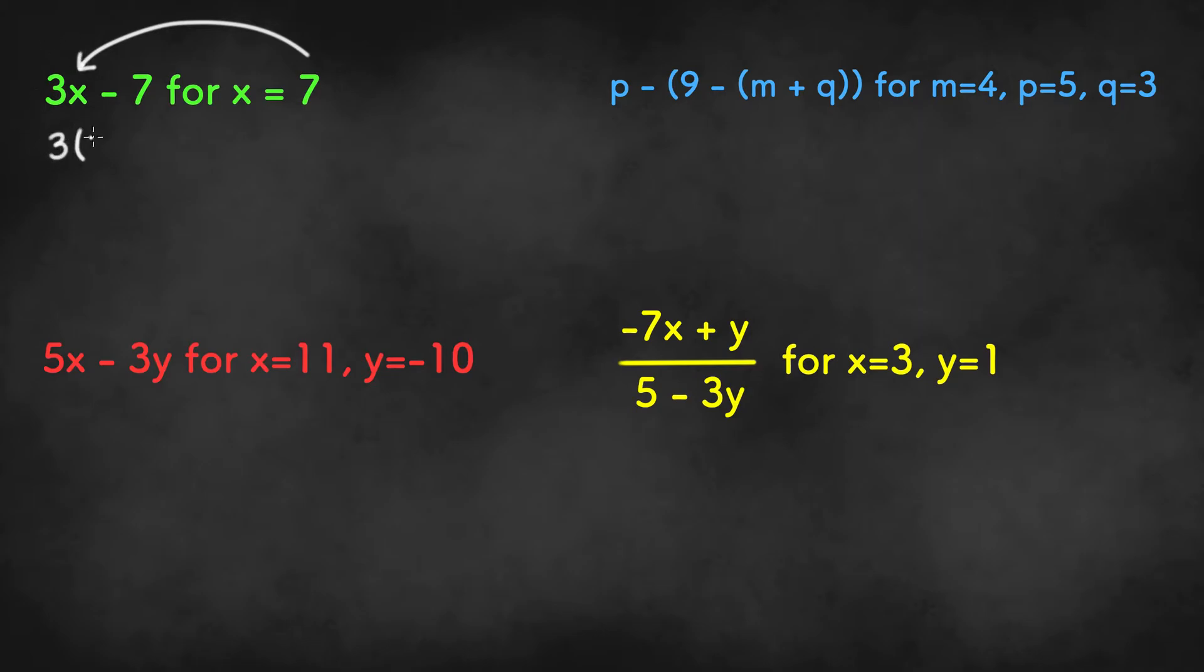Once we plug in 7, we get 3 times 7 minus 7. 3 times 7 is 21, and 21 minus 7 equals 14. And that's our final answer.